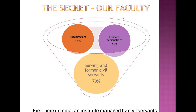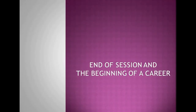The secret of our faculty at Global IAS Academy is a blend: 15% are academicians, 15% are eminent personalities, and 70% are serving and former civil servants. This combination gives a perfect blend because the examination demands trainers from people who have recently passed the exam, as the examination trend keeps changing. You need to keep up with the trend and pattern of questions, which is best done by those who qualified in the recent past. This video has covered a brief orientation of the IAS examination — I hope it has been helpful. Thank you.